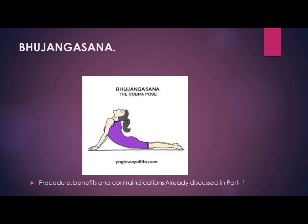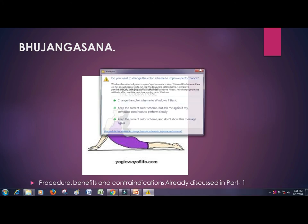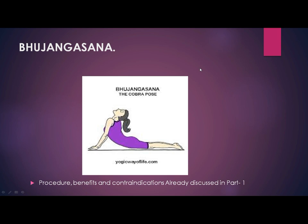Now we will study Bhujangasana. The name comes from the Sanskrit word Bhujanga, meaning snake or cobra, and asana means posture or seat — named for its resemblance to a cobra with its hood raised. The pose is described in 17th century Hatha Yoga. Bhujangasana is a reclining back-bending asana in Hatha Yoga and modern yoga, commonly performed in a cycle of asanas in Surya Namaskar as an alternative to Urdhva Mukha Svanasana.